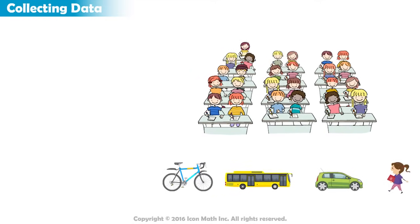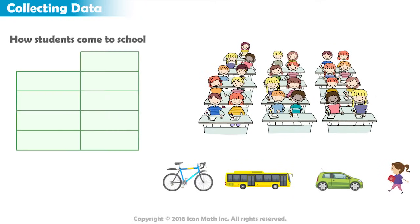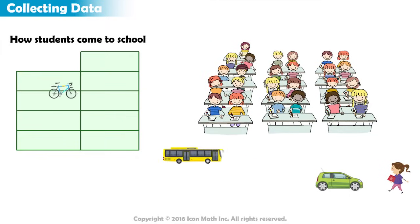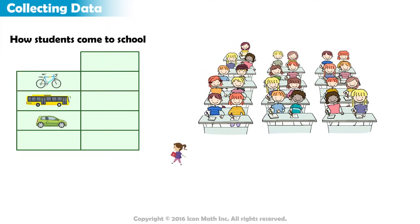It is useful to organize the data in a table first. In the first column, we indicate how students come to school. In the second column, we write the count, using numbers or tally marks.